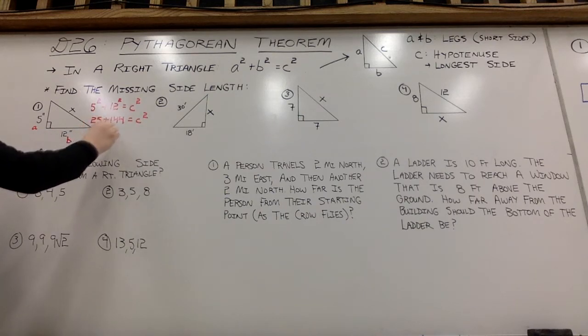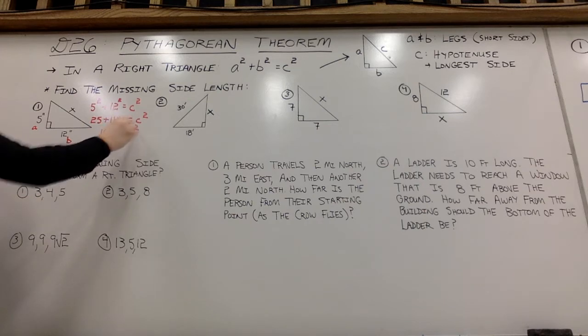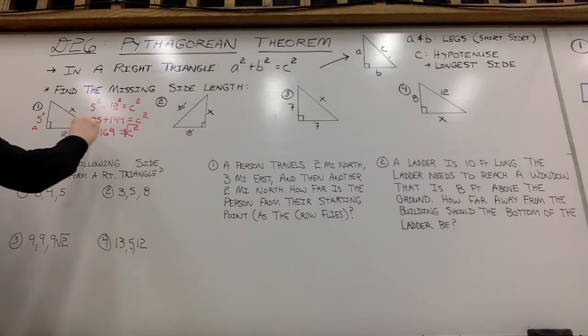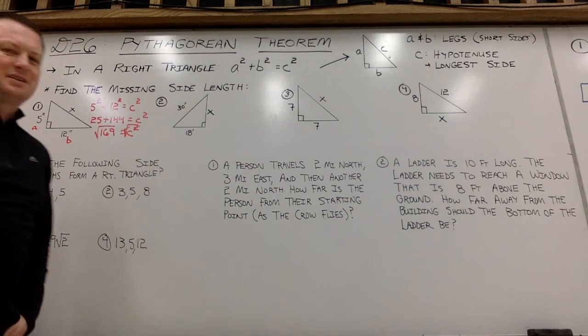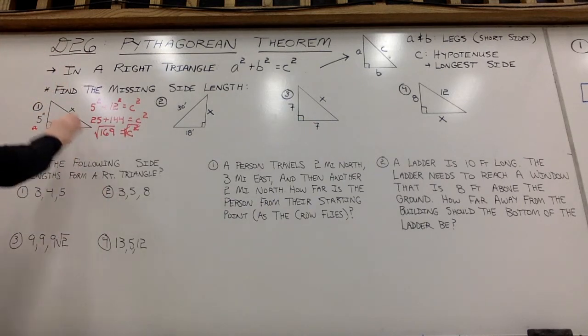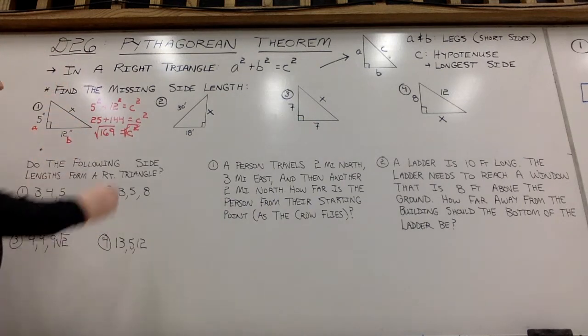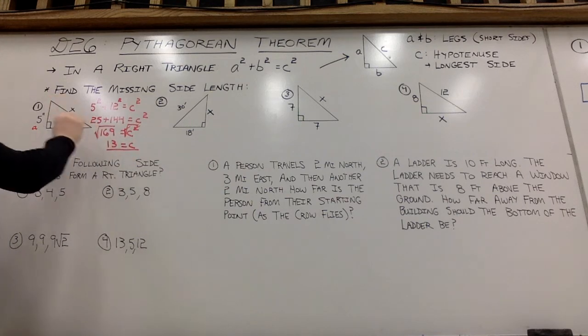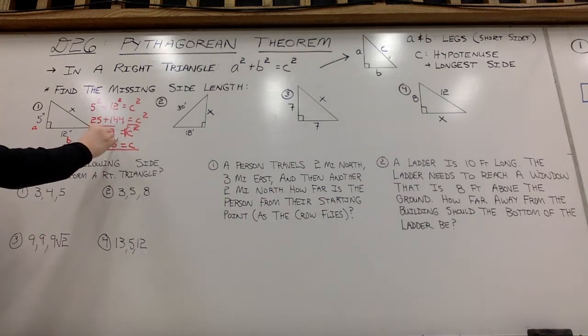So I'm going to have 169 equals c squared. To get c alone, we know that to undo a square, we will square root both sides. Now technically, c, the hypotenuse, could be positive and negative 13. However, since we are talking side length of a triangle, I am only going to use the positive square root. So 13 inches would be the length of the hypotenuse.